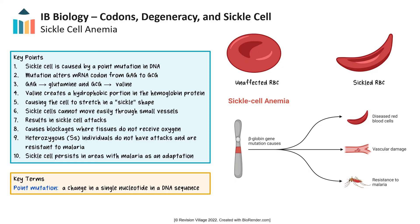The mutation that causes sickle cell anemia is an excellent example of how one small change in the nucleotide of DNA has an effect on the protein, the organism, and finally whole populations through natural selection.